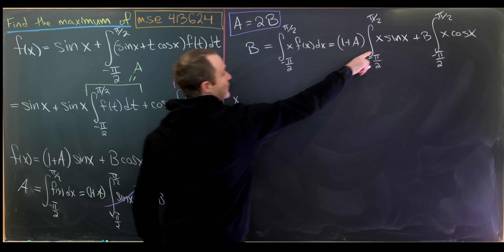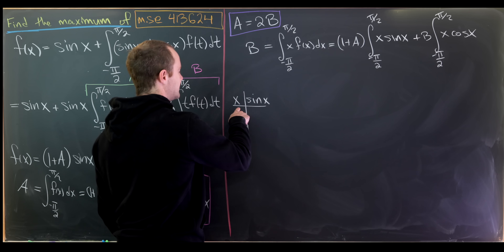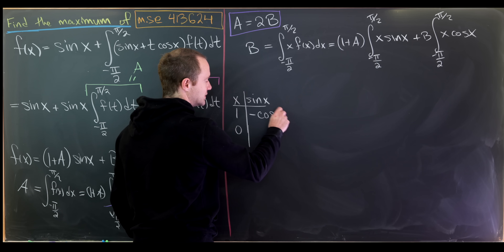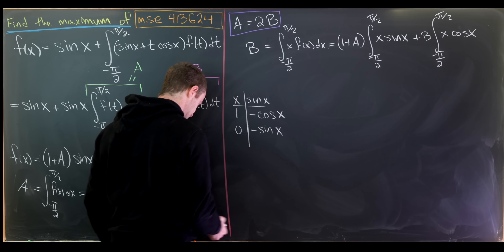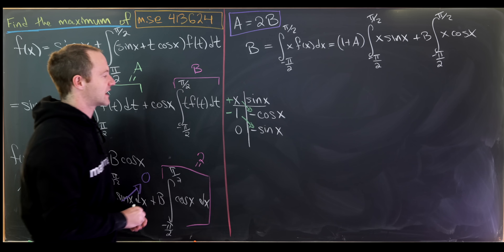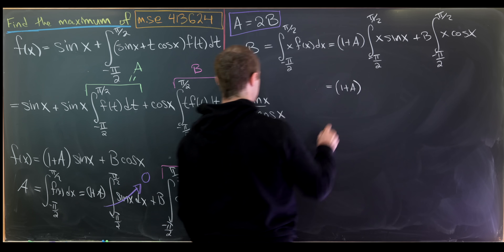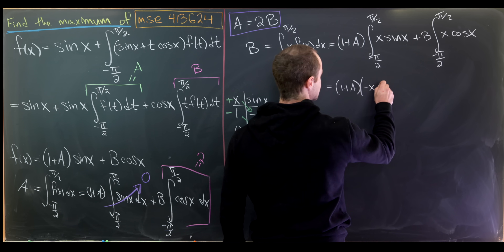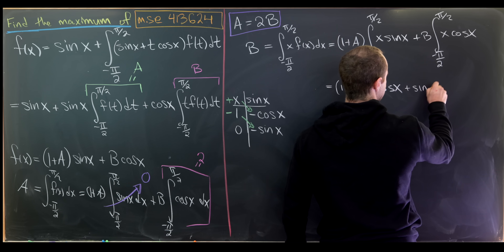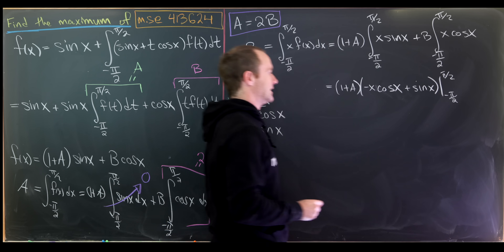Let's look at the integral of x times sine of x first. Taking derivatives down one column: x, 1, 0; and antiderivatives down the other: minus cosine of x, minus sine of x. Matching on the diagonal and alternating signs leaves us with minus x cosine of x plus sine of x. We then evaluate this from minus pi over 2 to pi over 2.